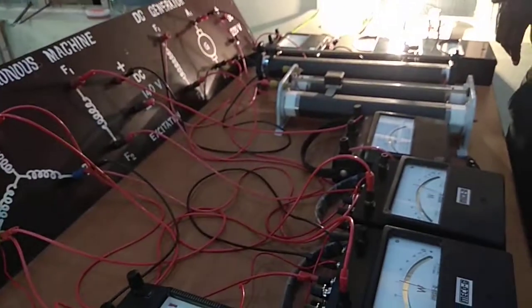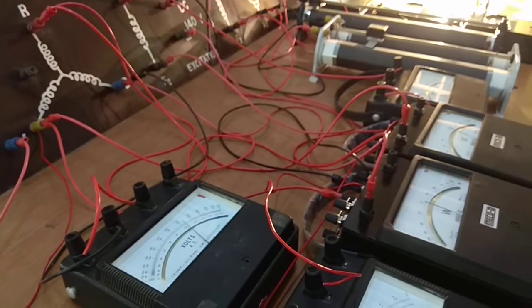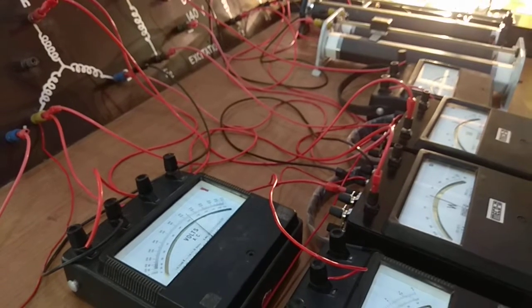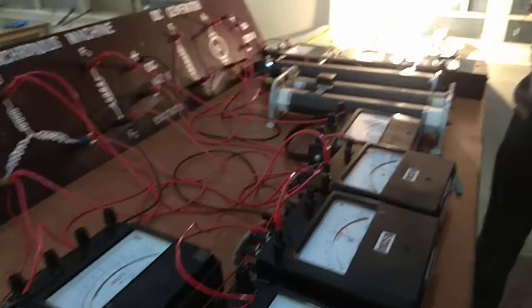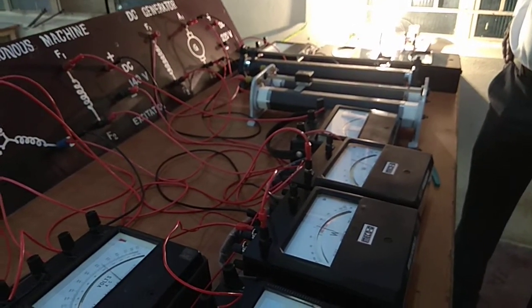Then by using the readings tabulated, we can calculate the power factor by using the formula. Cos phi is equal to cos of tan inverse root 3 into W1 minus W2 divided by W1 plus W2.